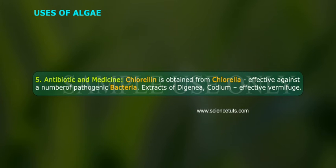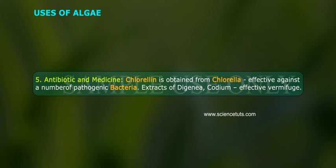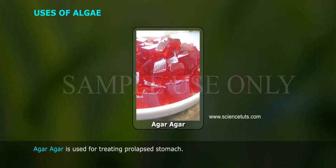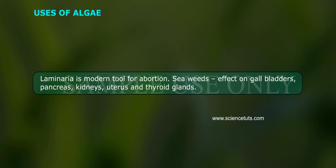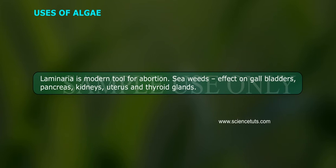Antibiotics and Medicine. Chlorellin is obtained from Chlorella and is effective against a number of pathogenic bacteria. Extracts of Dictyota and Codium are effective vermifuges. Agar agar is used for treating prolapsed stomachs. Laminaria is a modern tool for abortion. Seaweeds affect gallbladders, pancreas, kidneys, uterus and thyroid glands.